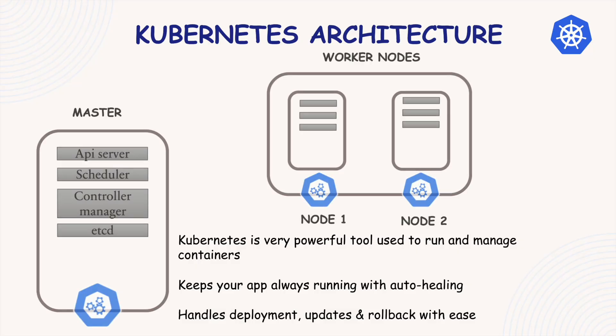I will show you the two main types of nodes in Kubernetes: the master node and worker nodes. We will see what each one does inside a Kubernetes cluster. We will also understand how Kubernetes is self-healing, automated, and reduces your manual work. Once you understand the basics, you will see how helpful and smart Kubernetes really is.